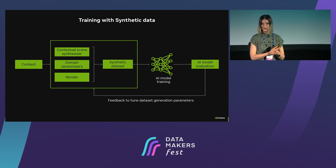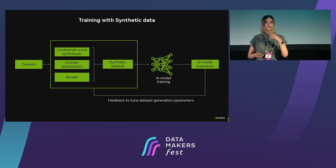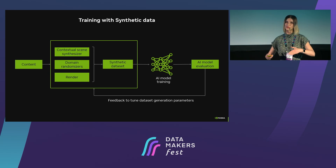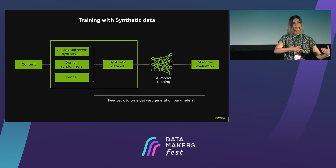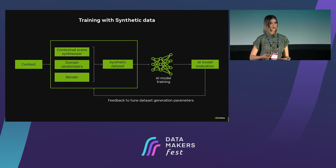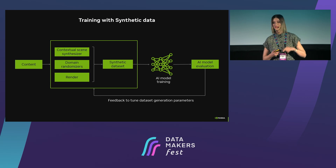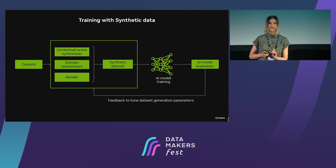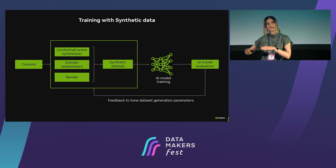With synthetic data, it's a little bit different. First, you need to understand what kind of content you're trying to simulate. Then you bring this content into the digital world and apply a set of randomizers. Then you apply rendering to this virtual scene and generate data plus annotation masks together. You get your synthetic dataset, which you use to train your neural network. Upon evaluation, you can use the results as a feedback loop to your synthetic generator, meaning you can automate the process and make your data perfect based on the evaluation metrics.